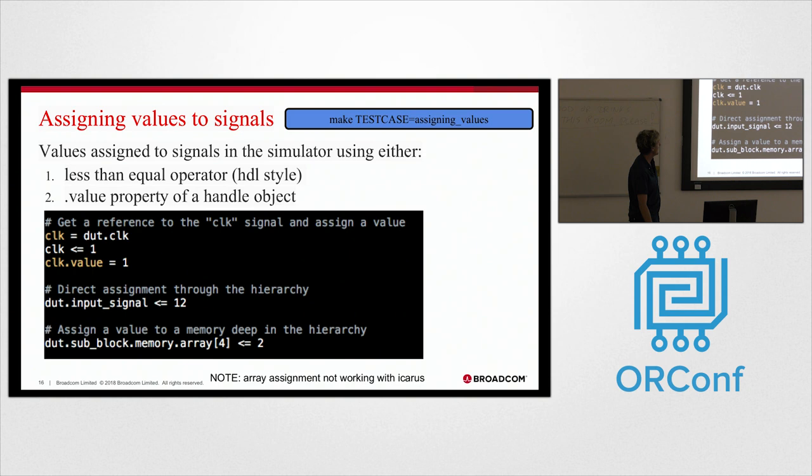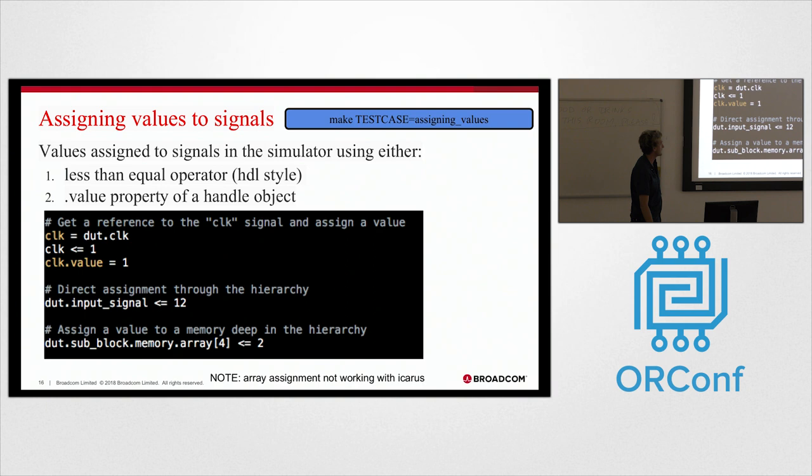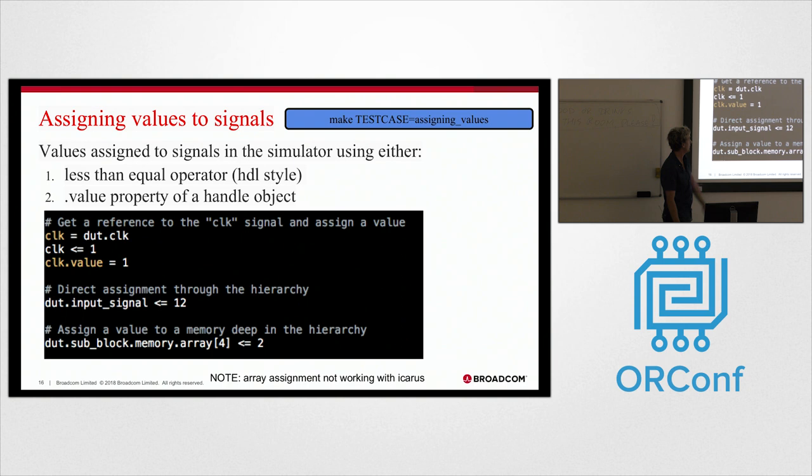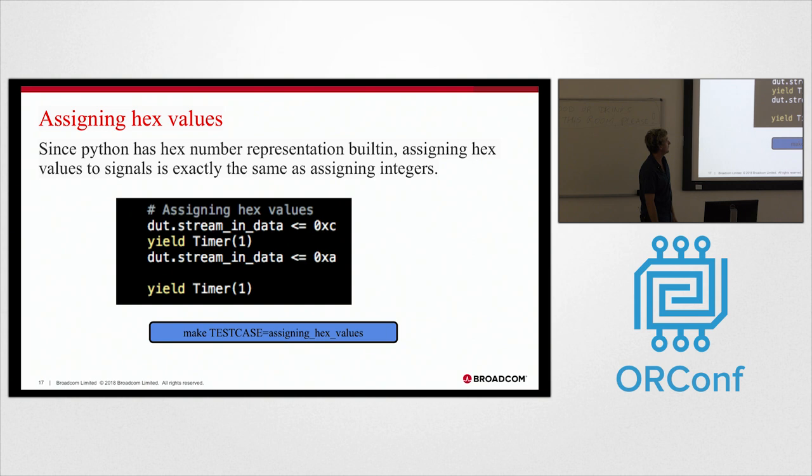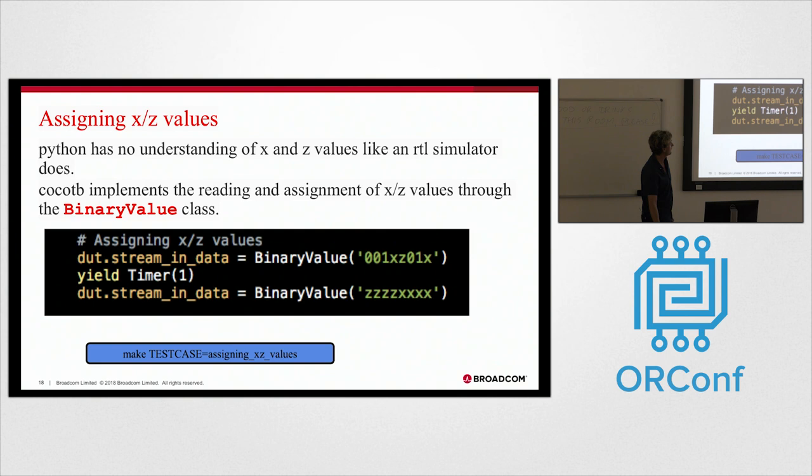So cool, we can read signals. Now, what about assigning values to signals inside the simulator? The less than or equal to operator makes people from RTL land feel nice and at home. Then you can use this dot value notation as well. You can dig down into the hierarchy and assign stuff, and the same with arrays, although array assignment doesn't work in Icarus. Hex values is pretty simple because Python knows about hex values. And then X and Z values - you can create your own binary value objects here and assign those to values inside the simulator.